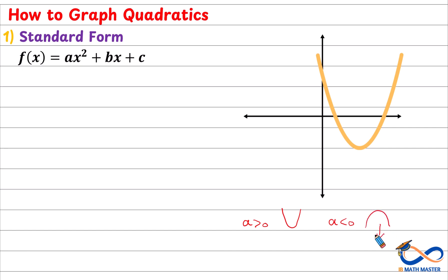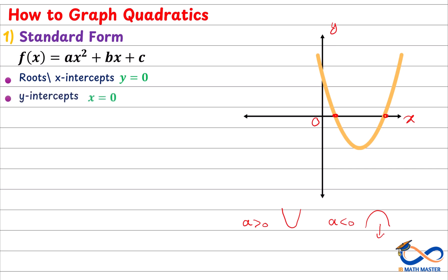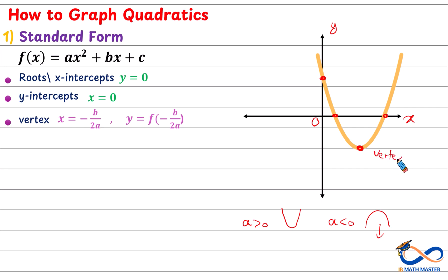To graph quadratic functions correctly, we need to know many elements. First we have the roots or the x-intercepts, which are the points on the x-axis where the y coordinate is zero. That's why to find the x-intercepts we replace y by zero. Second, we have the y-intercept, which is the intersection between the graph and the y-axis, where x is zero. So to find the y-intercept, we replace x by zero. Next we have the vertex point, which is the turning point for the quadratic graph. The x-coordinate of the vertex will be negative b over 2a, where a and b are the coefficients. To find the y-coordinate of the vertex, we replace this x value in the function to get y, as we will see in the coming examples.